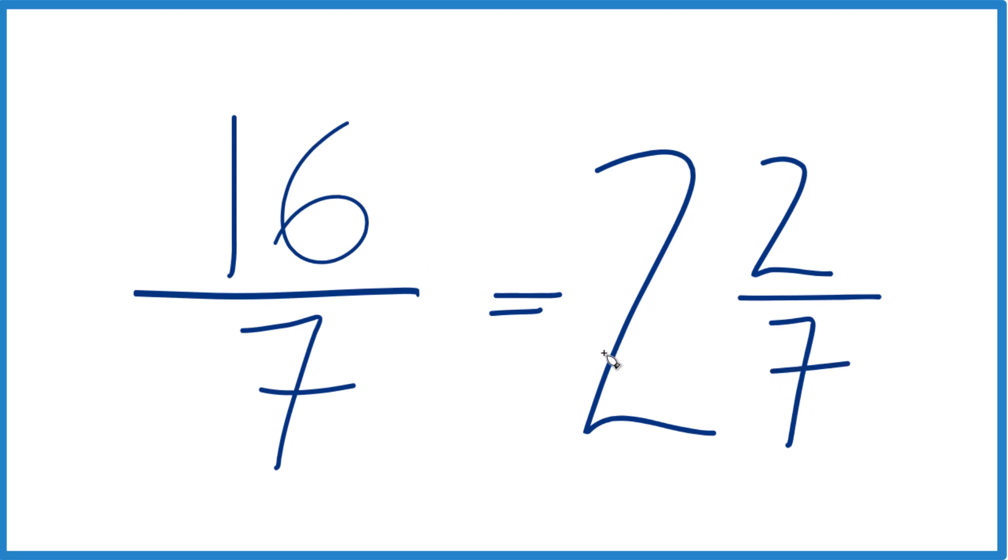And 16 sevenths, that equals 2 and 2 sevenths. And you can check that because 2 times 7, that's 14. 14 plus 2, that's the 16. We just keep the 7 the same there.